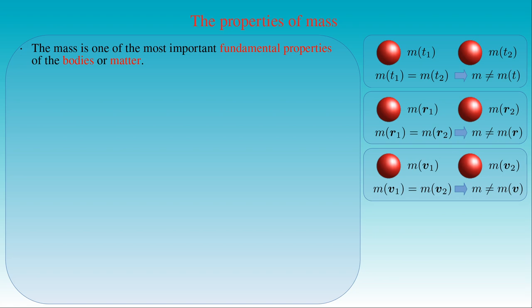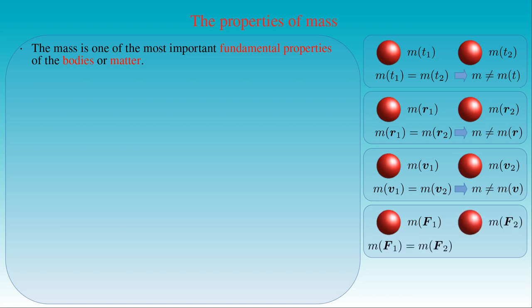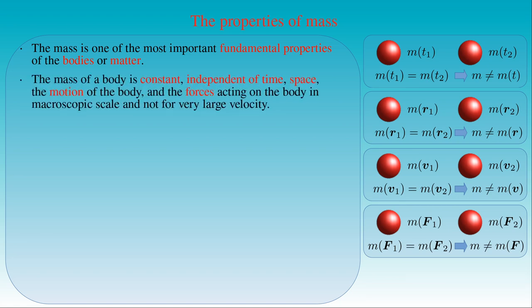We can summarize these findings as follows: the mass of a body is constant, independent of time, space, the motion of the body, and the forces acting on the body — at macroscopic scale and not for very large velocity. These properties of mass seem to be evident. However, the restriction that these statements are valid only on macroscopic scale and not for very large velocity indicates the opposite. In classical mechanics we still accept the validity of these statements and use them as a satisfying description of the properties of mass.